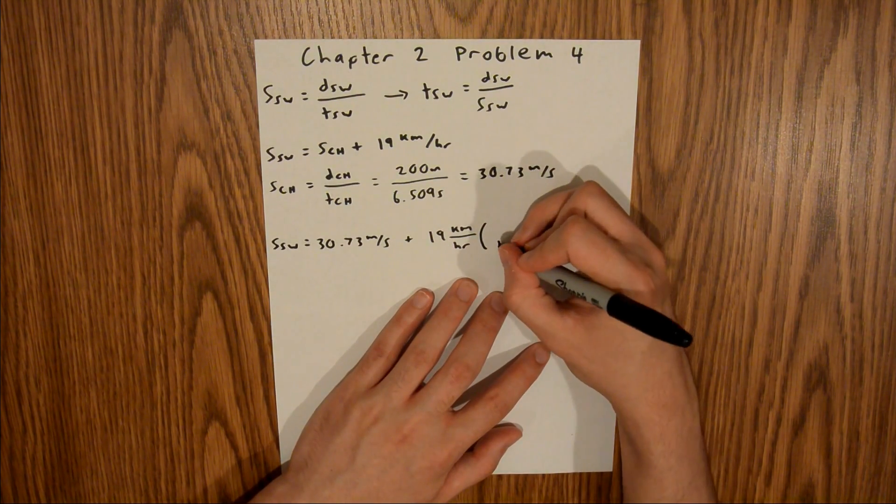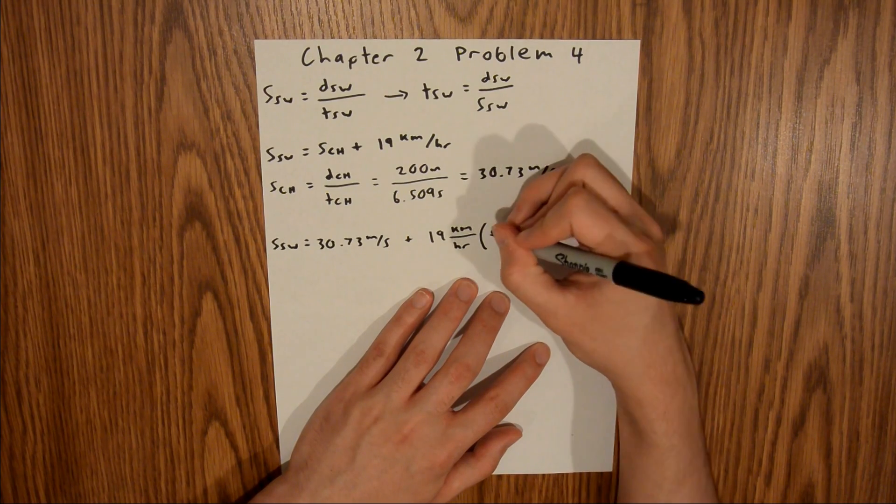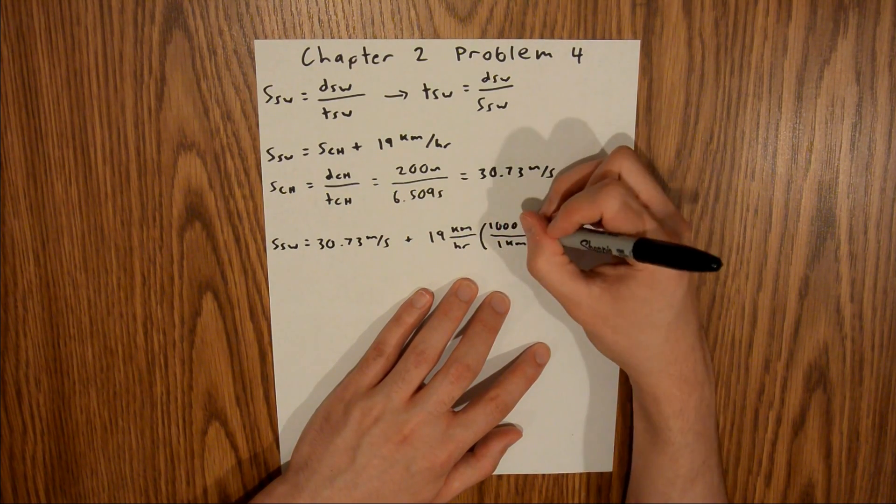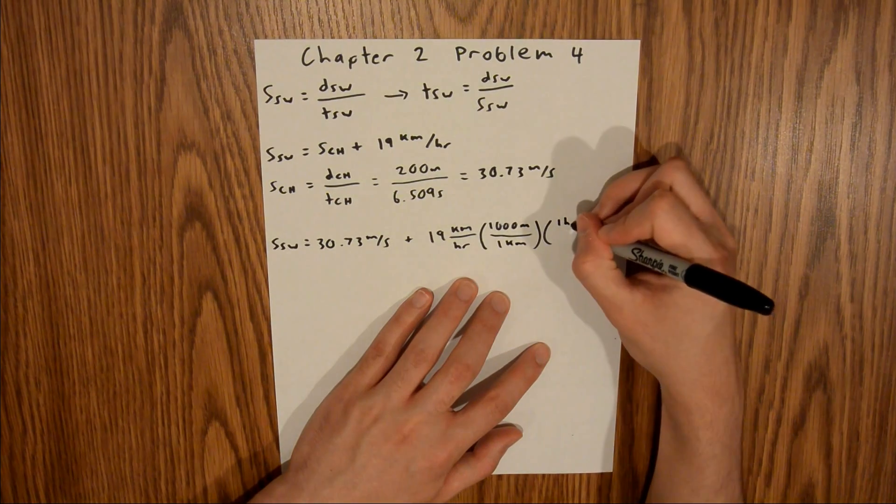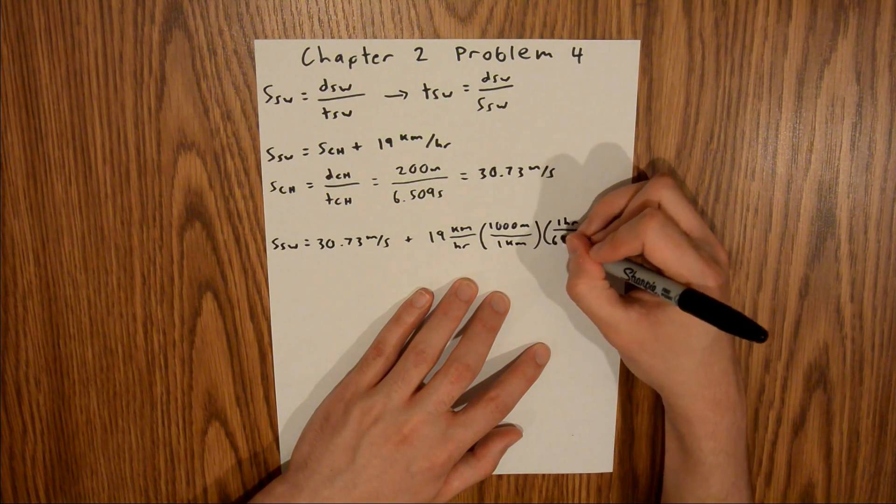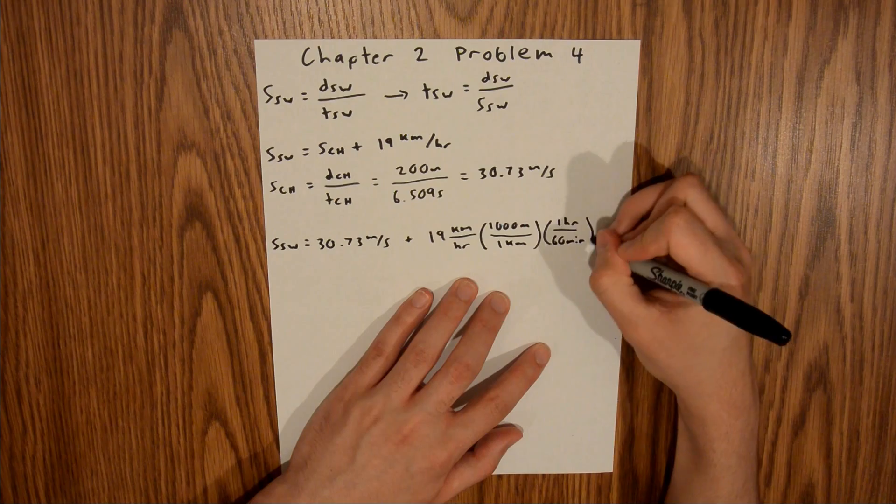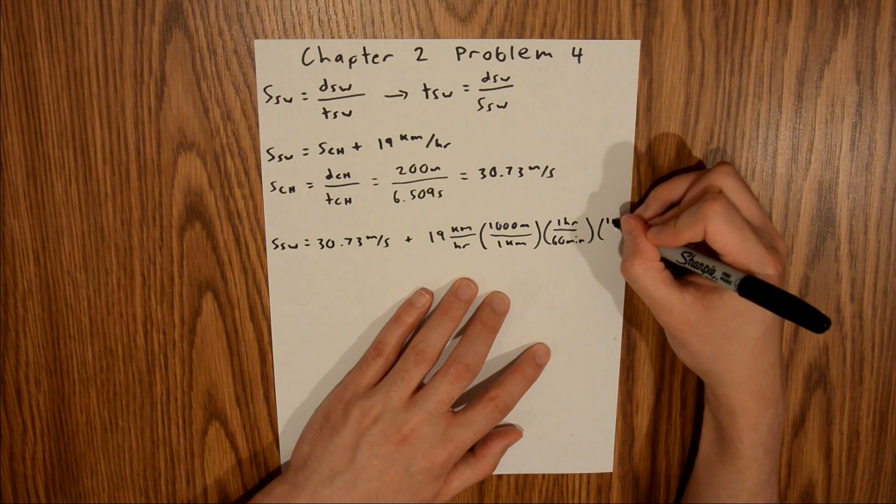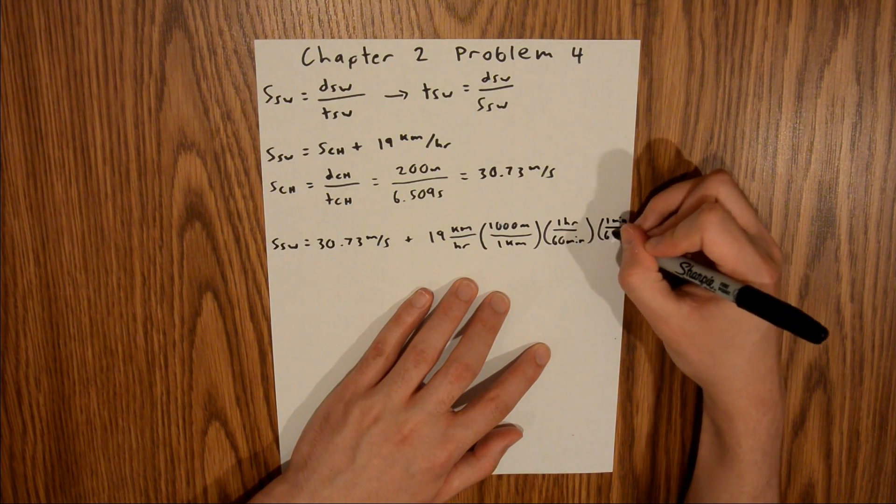In 1 km, we have 1,000 meters. In 1 hour, we have 60 minutes. And in 1 minute, we have 60 seconds.